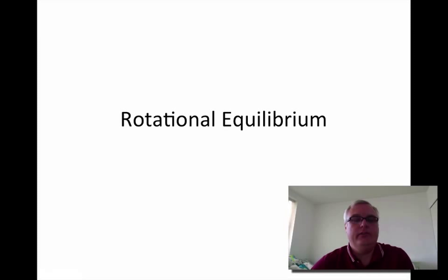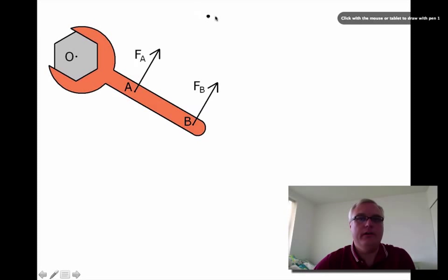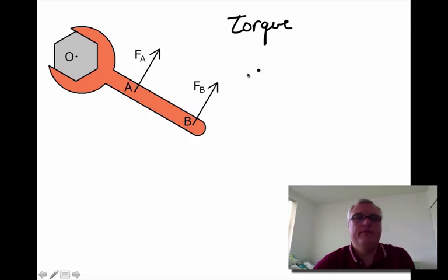This video is talking about rotational equilibrium, and in rotational equilibrium we're interested in something called torque. Torque occurs when you apply a force in a direction which is going to cause a rotation, and torque is symbolized by this Greek letter tau and it's equal to force times distance.